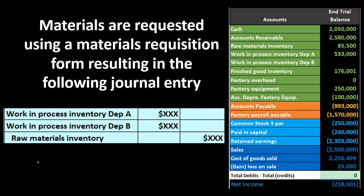The journal entry is triggered by a materials requisition form — the form indicating that materials are needed from the warehouse and moved to the work in process department. The journal entry debits Work in Process — Department A and Work in Process — Department B for their respective materials needs (sugar for A, wax paper for B), and credits Raw Materials.